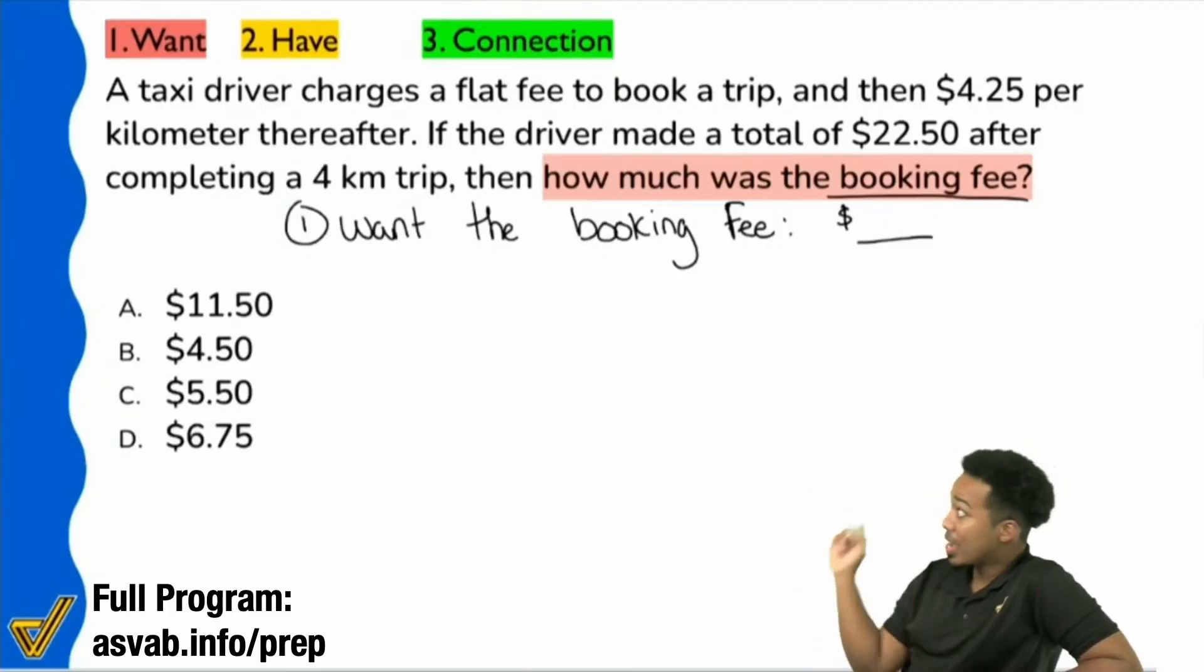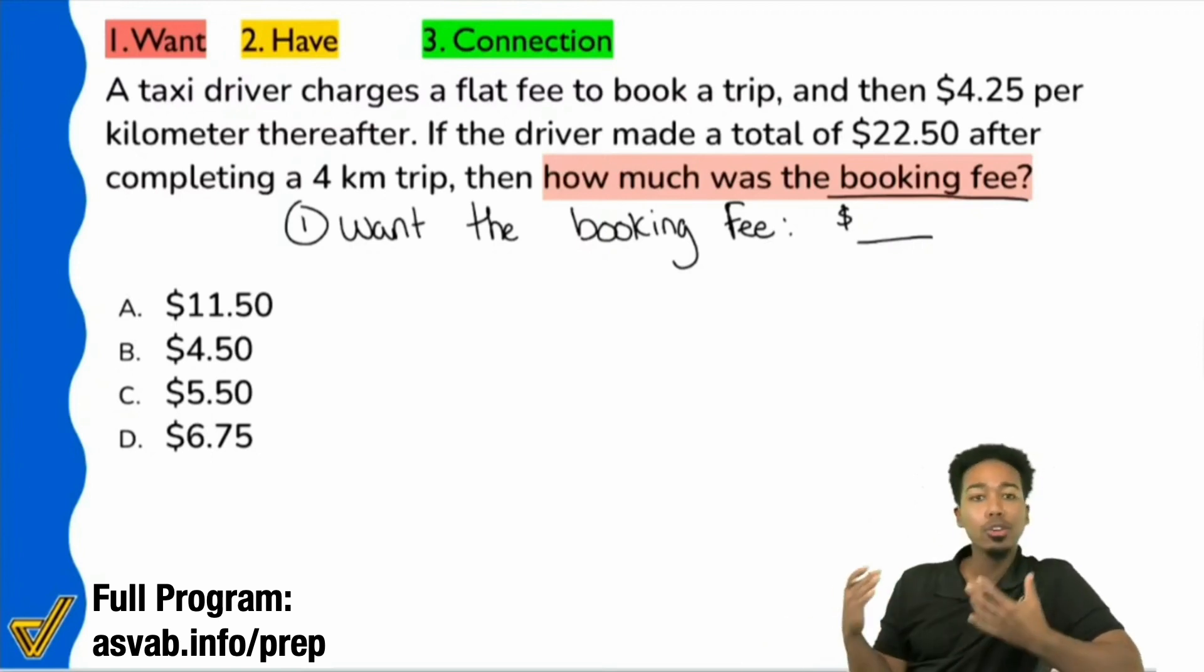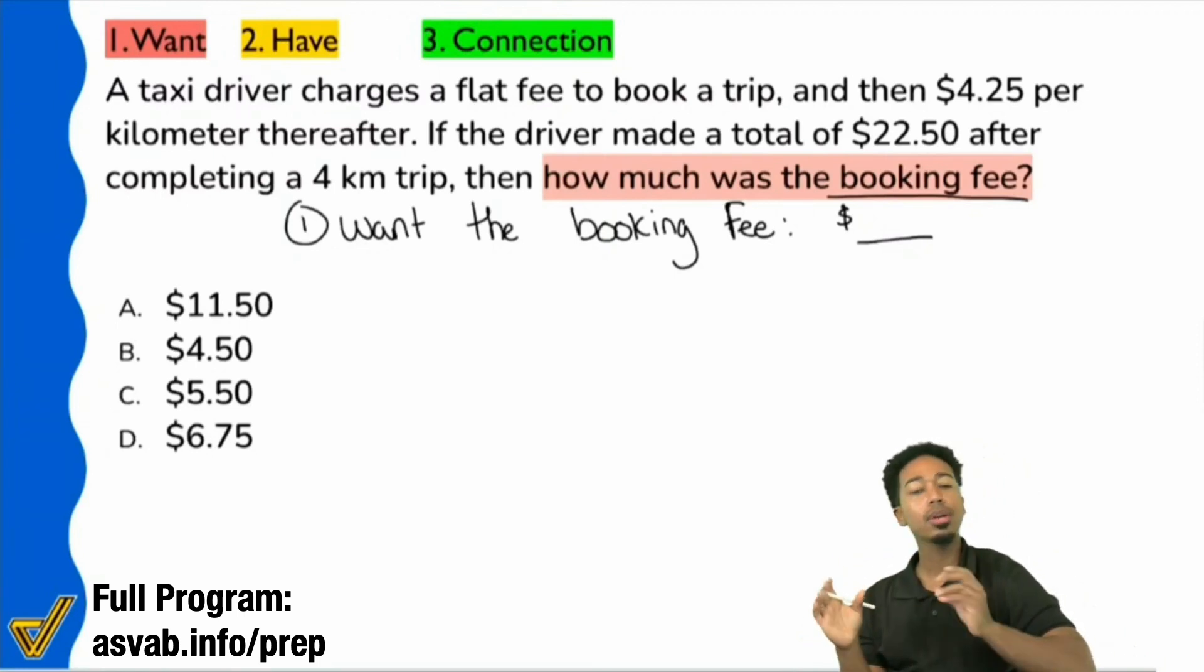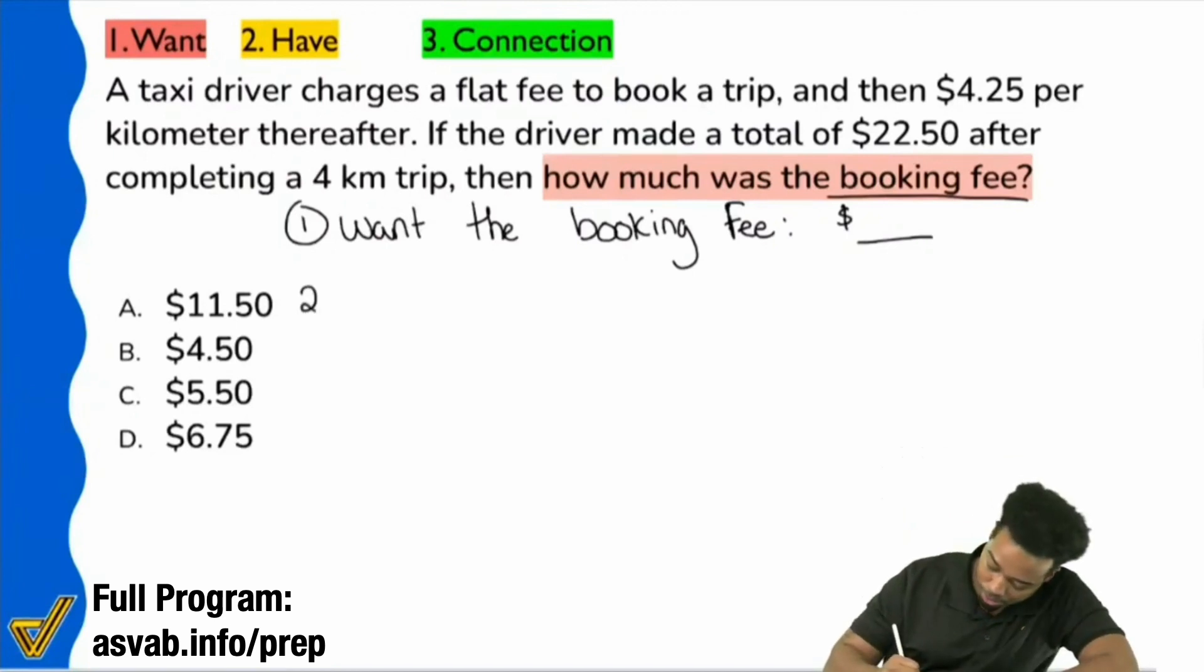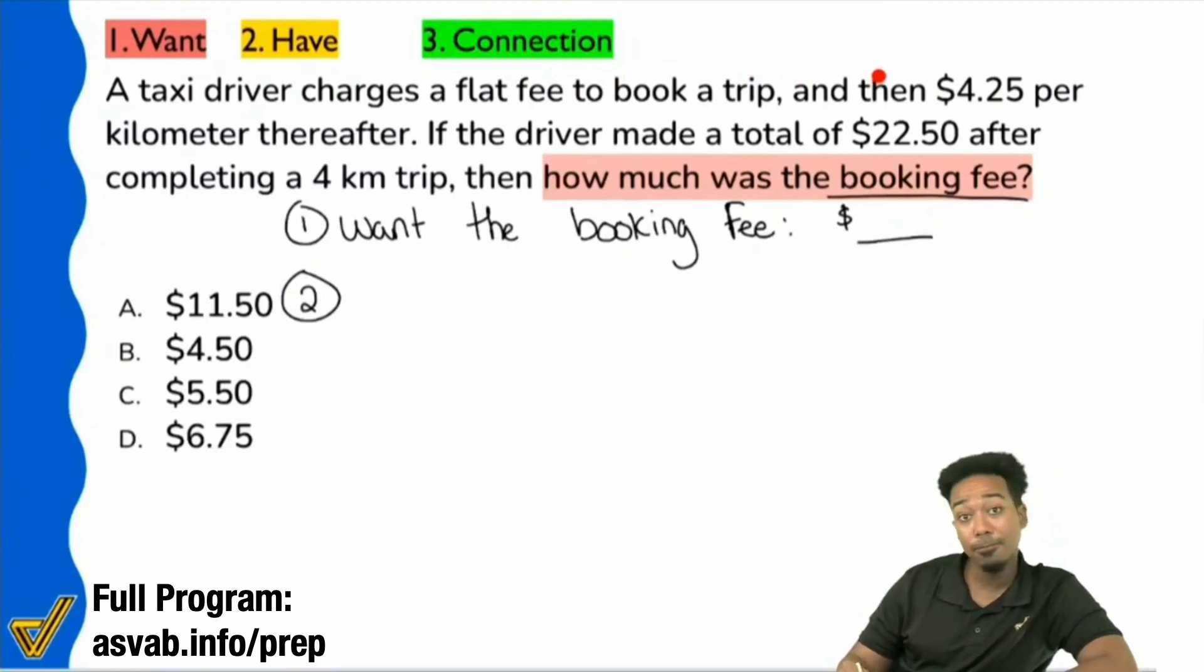But here we go. We're looking for the booking fee. All we know right now is that it's a dollar amount. Okay, don't freak out. If it doesn't automatically come to you, this is where you got to stay calm, cool, and collected. Let's take a look at the information and use the clues that we have. Step two. Let's understand what we have.